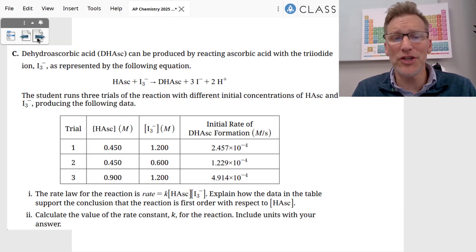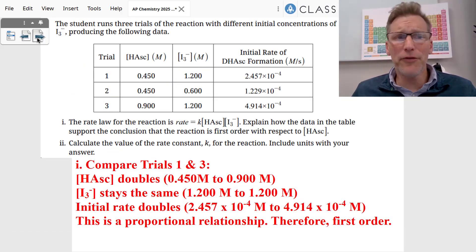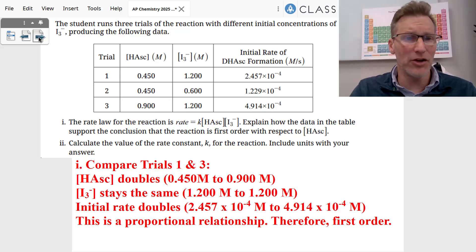Let's go to problem C. Problem C turns into a kinetics problem. They give us concentrations and initial rates. And the first thing they want us to do in problem number I is explain how the data supports the conclusion that it's first order with the ascorbic acid. So what are we going to do? We're going to compare trials 1 and 3. What happens between 1 and 3? The ascorbic acid doubles. It goes from 0.45 to 0.90. The I3 minus stays the same so that you're canceling that out. You can see the initial rate doubles from trial one to trial three, which means this is a proportional relationship. Therefore, it is first order and it is conclusive.